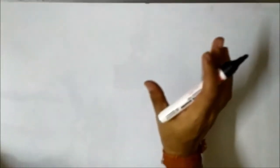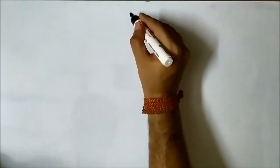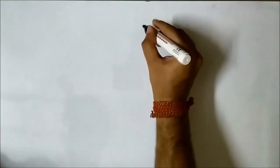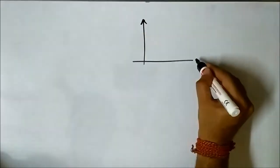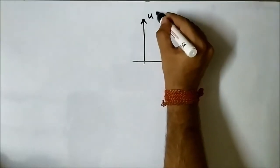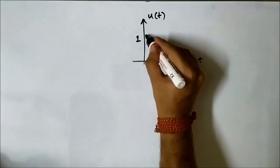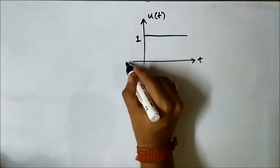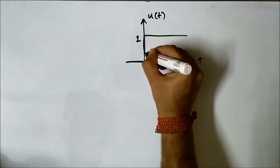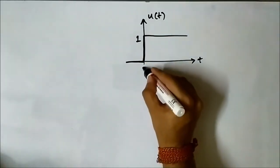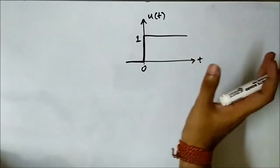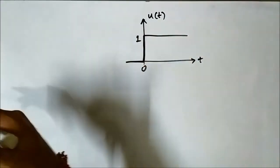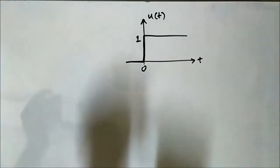First, let us take a standard signal — the unit step signal. This is the unit step signal. It exists for all positive time t greater than or equal to 0, and is 0 in the negative direction. The time-reversed signal will just be the mirror image of this.